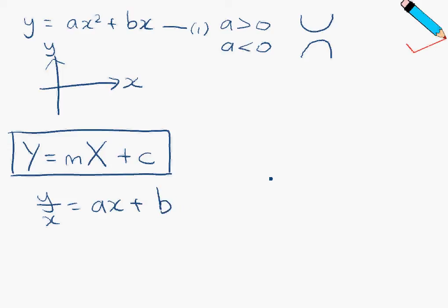So you realize that now this is in the form y equals mx plus c, where my big Y is y over x, my big X is just x, my m is a, and then my c is b.